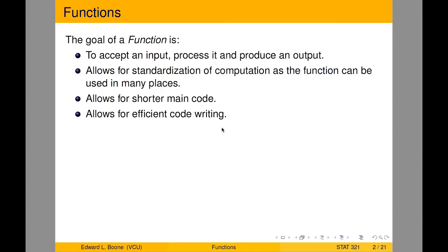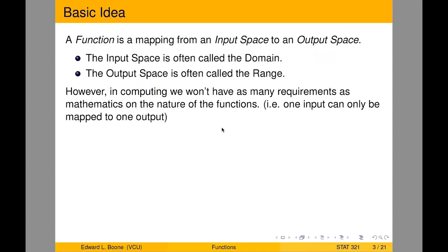Also, if you find a bug in a function, that bug is located only in that function. Once you've fixed it there, you've fixed it every place that function is called. So a function is a mapping from an input space to an output space — that's the mathematical definition. The input space is often called the domain; the output space is often called the range.